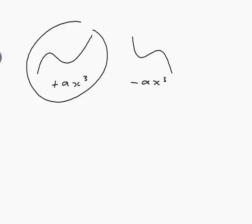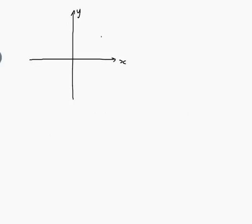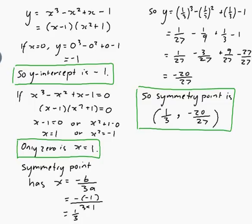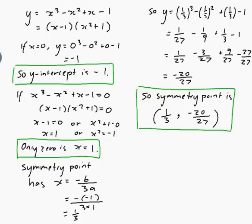So why don't I actually draw the axes and see what I can do. So we've got the y-axis and the x-axis. Now the y-intercept, just having a look, the y-intercept was minus one. So minus one. And the x-intercept, so the zeros was x equals one. So one.